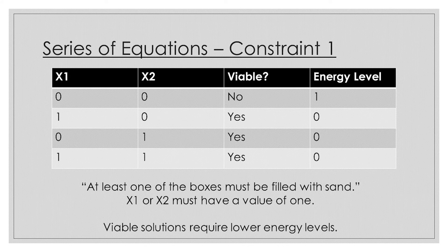Let's start off with the first condition: at least one of the boxes must be completely filled in. Remember, when it comes to writing QUBO equations, you want your correct solutions to have lower energy levels than the incorrect solutions. So in this case, we want x1 or x2 to be equal to 1, meaning it's filled completely with sand, or both. In all cases but the first one, either x1 or x2 is set to a value of 1, meaning that the first case is the only one that does not satisfy our constraint, as both x1 and x2 are 0.